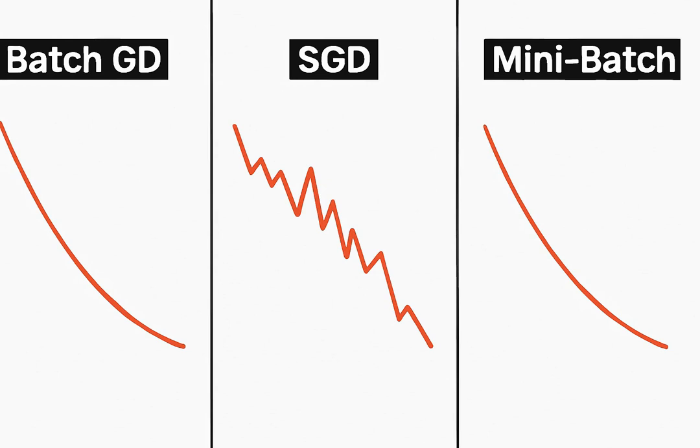There are different flavors of gradient descent: batch gradient descent, stochastic gradient descent, and mini-batch gradient descent. Batch uses all the data for each step — accurate, but slow. Stochastic uses just one data point — faster, but noisy. Mini-batch is the balance, using small groups of data.